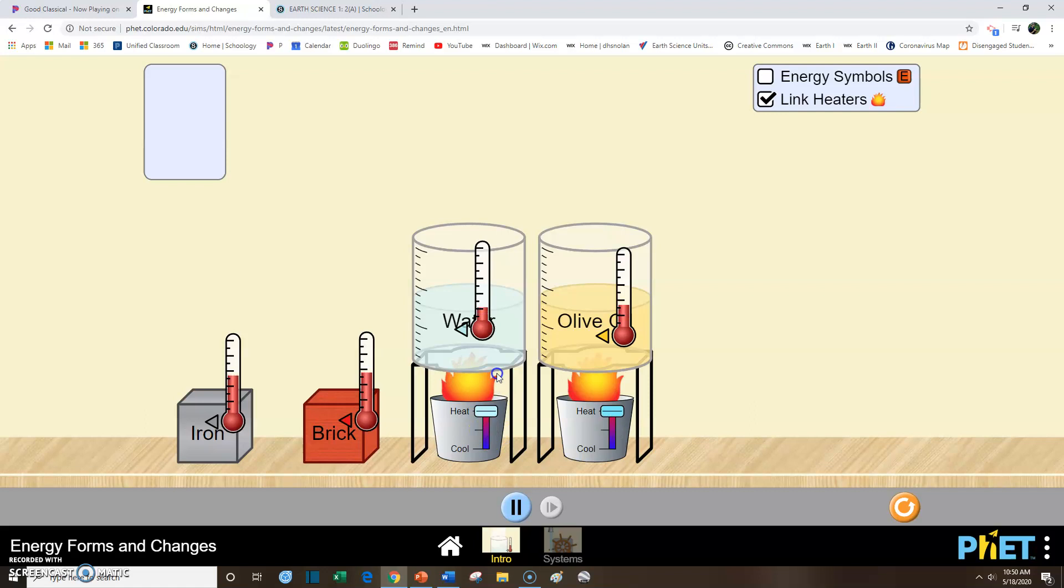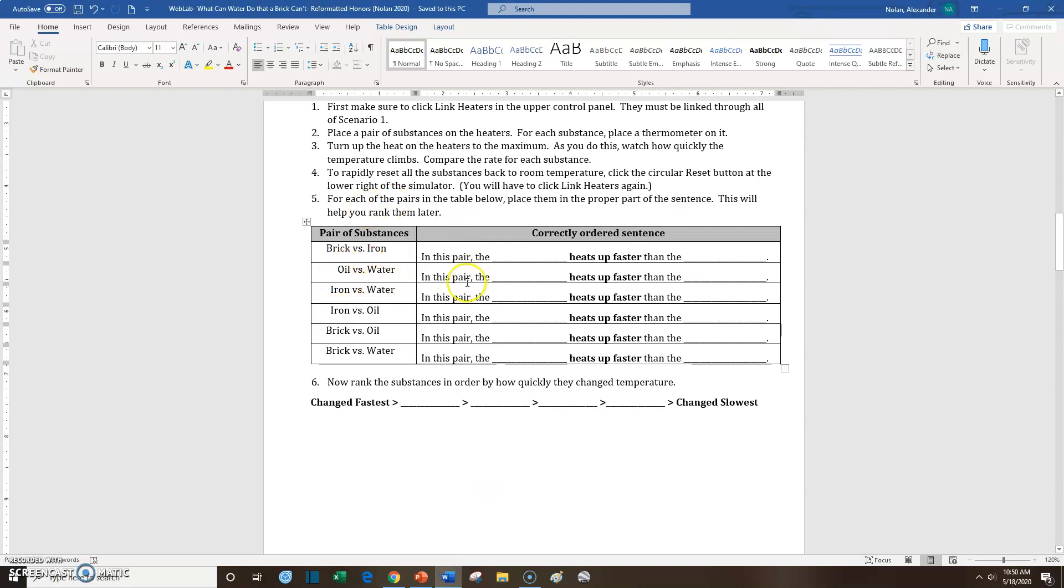As we're heating them, let's go ahead and watch. And it's pretty easy to tell right away, the oil is heating up way faster than the water is. So the oil is much, much hotter at this point than the water is. So oil versus water. In this pair, the oil heats up faster than the water.